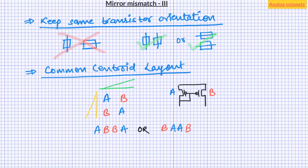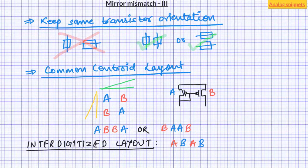Notice that common centroid geometry is different from another widely used and closely related technique called interdigitization. Interdigitized layout do not cancel the linear gradients perfectly. And hence common centroid must be preferred when matching is important.